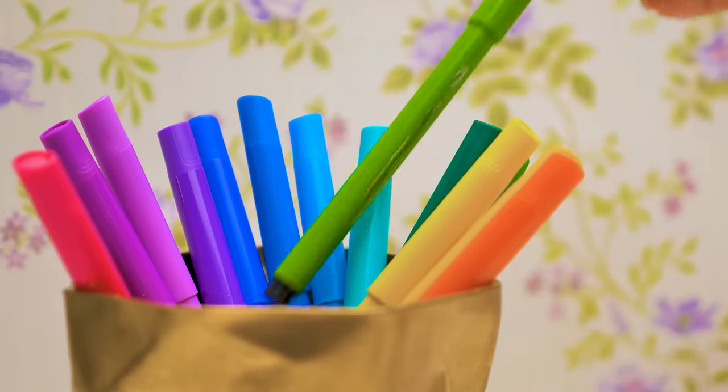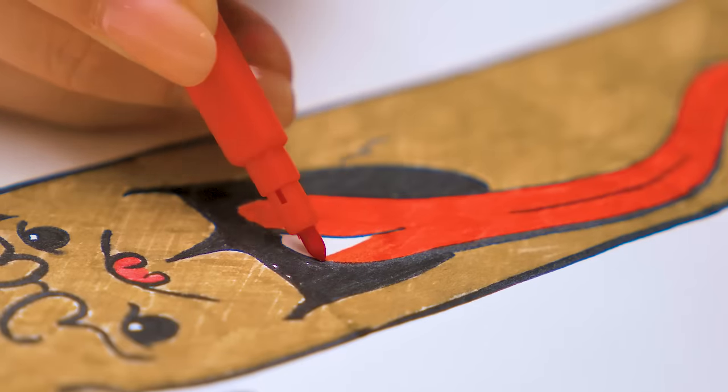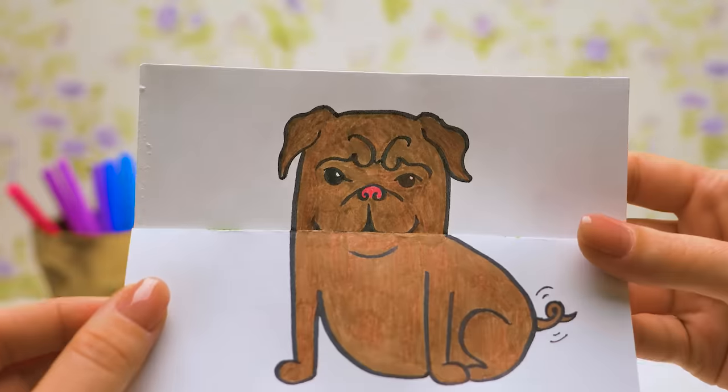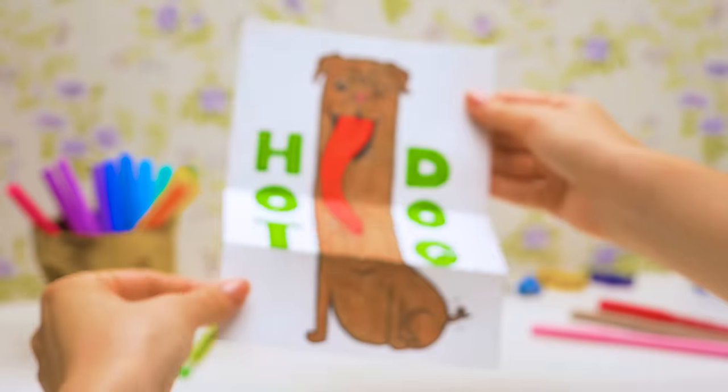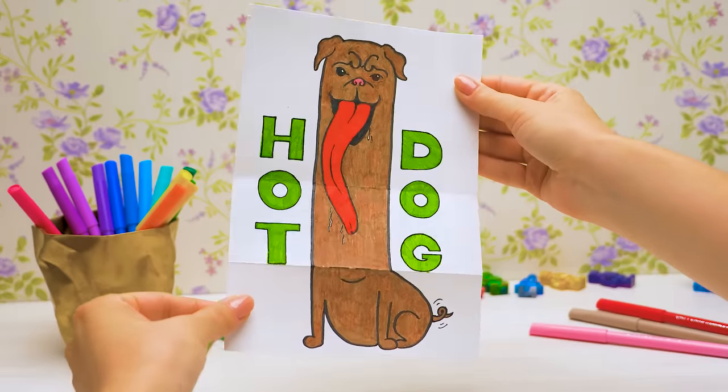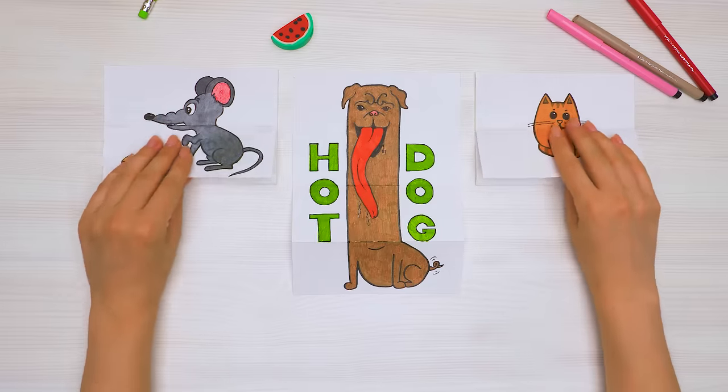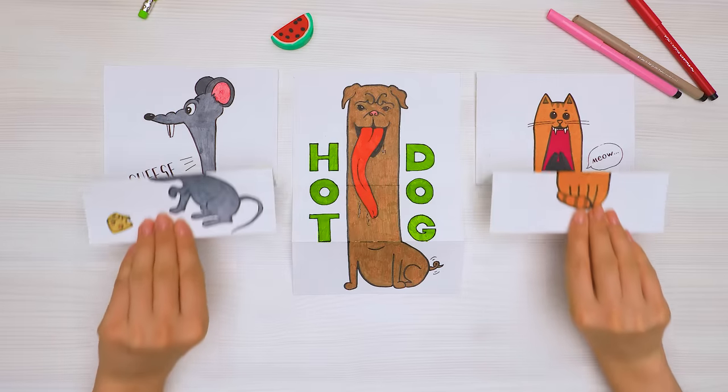To make the picture brighter, let's color it with felt pens. This is our cute doggie! I've also drawn several friends for him. Comment below which one you like best.